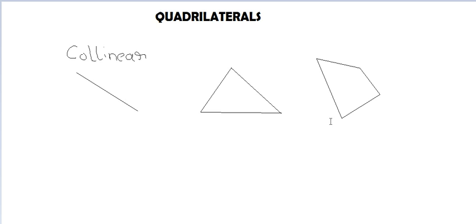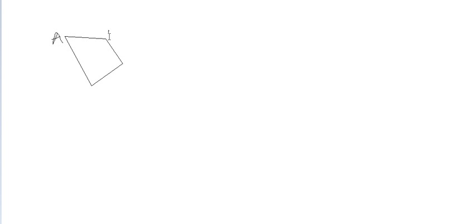A quadrilateral is a figure formed by joining 4 points in an order. Now I am making a quadrilateral and we will name its vertices A, B, C, and D.